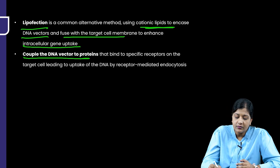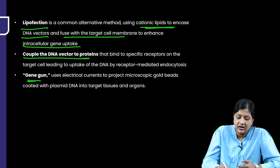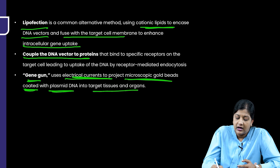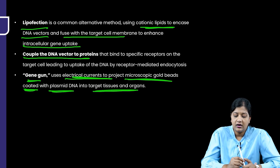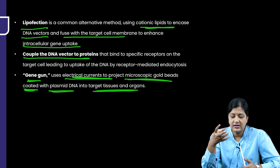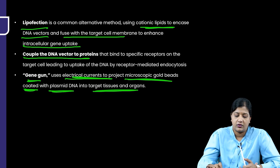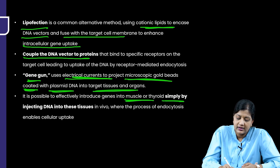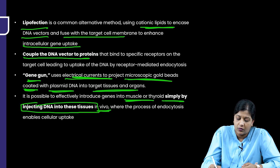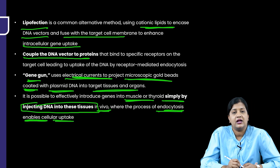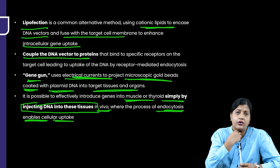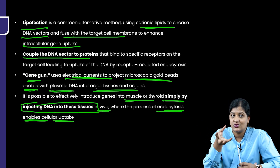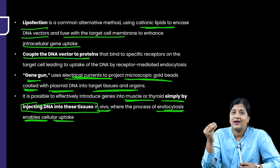Another approach is coupling the DNA vector to a protein or lipid to increase uptake. The gene gun method uses electrical currents to project microscopic gold beads coated with plasmid DNA into the target tissues and organs. It is also possible to effectively introduce genes into muscle or thyroid simply by injecting DNA into those tissues in vivo, where endocytosis enables cellular uptake.